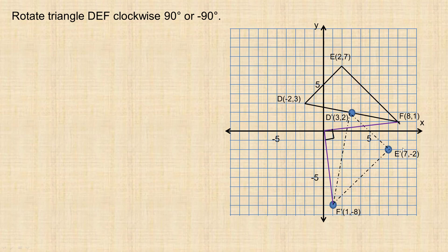Joining the center of rotation to the original point and its image confirms the right angle. The distances must be equal, and the angle is 90 degrees. Drawing the triangles for point F: the original is 8 to the right and 1 up, so one leg is 8 and the other is 1. In the image triangle, it's 1 over and 8 down — that's why the y-coordinate is negative 8. The numbers switch, but this time it's the x that changes its sign: 8 becomes negative 8 as the new y, while the original y of 1 stays positive as the new x.